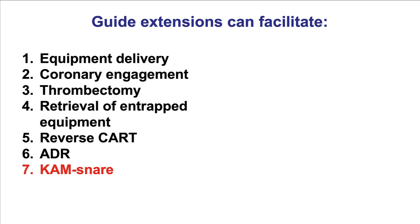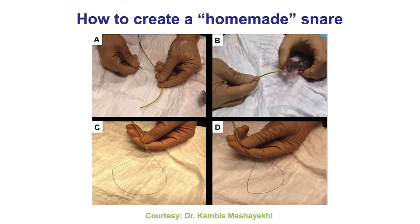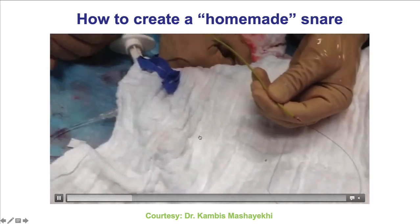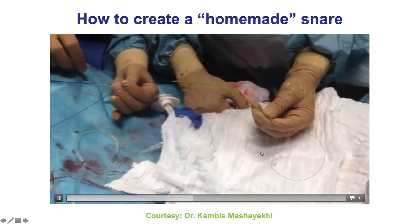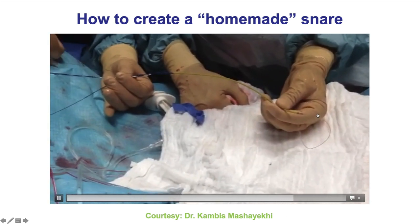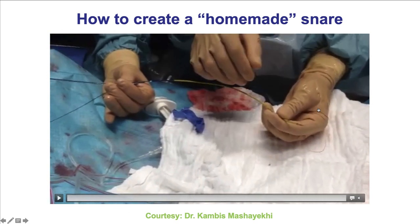Finally, guide extensions can be used to create a snare. This is an example of the so-called CAM snare, courtesy of Dr. Masayuki, in which a guide extension is used together with a small balloon and a guide wire. The balloon is inflated inside the guide extension, pinning the distal edge of the wire. By pushing and pulling the wire, the size of the snare can be modified — pushing makes the snare bigger, pulling makes it smaller. That can be used if there are no commercially available snares.